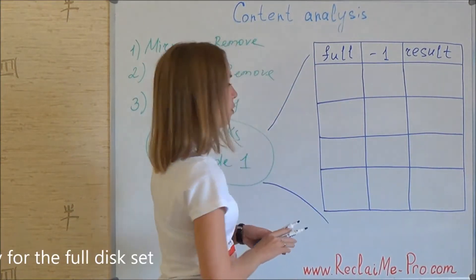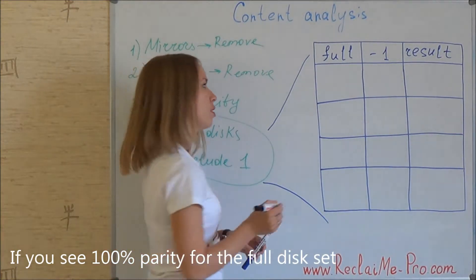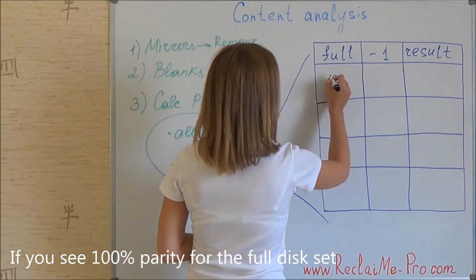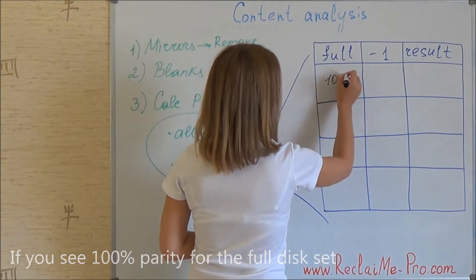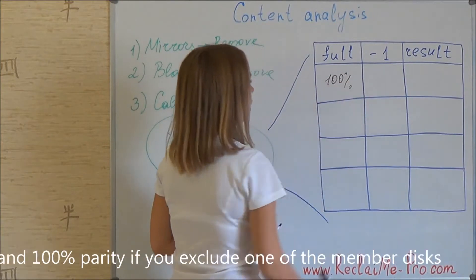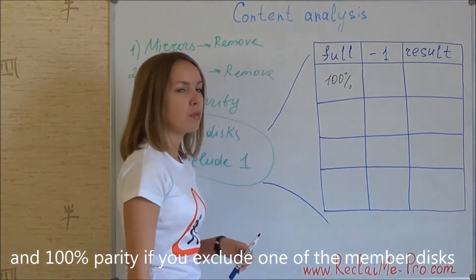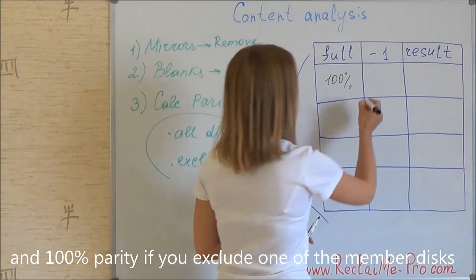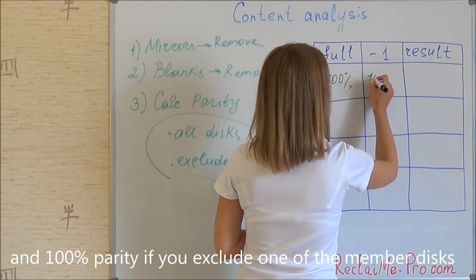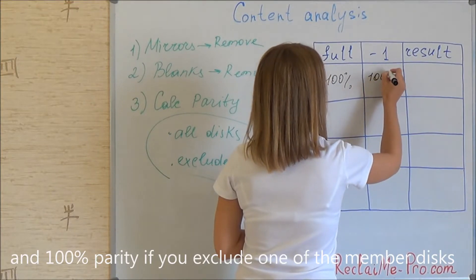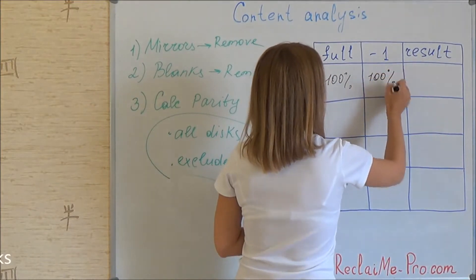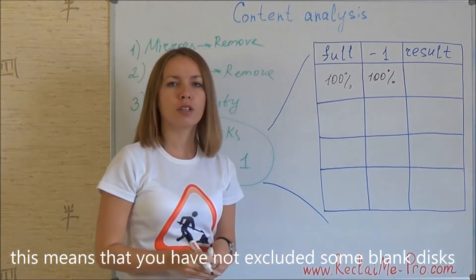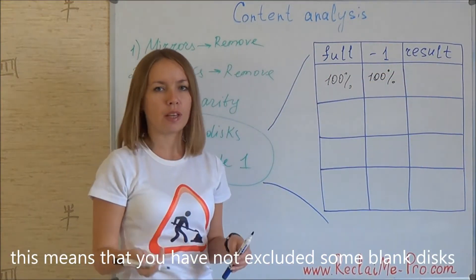If you see 100% parity for the full disk set and 100% parity if you exclude one of the member disks, this means that you have not excluded some blank disks.